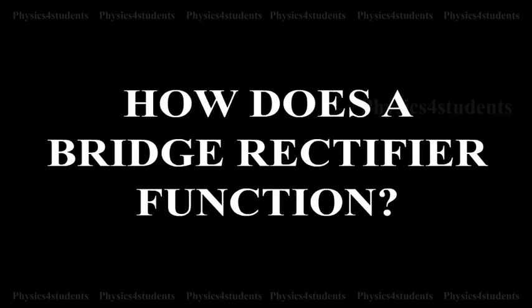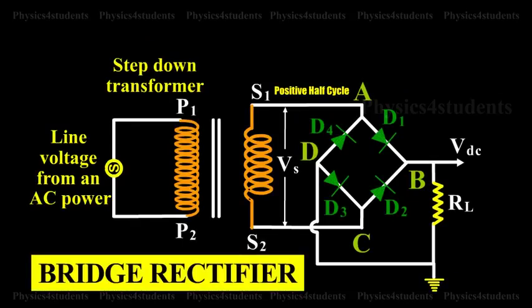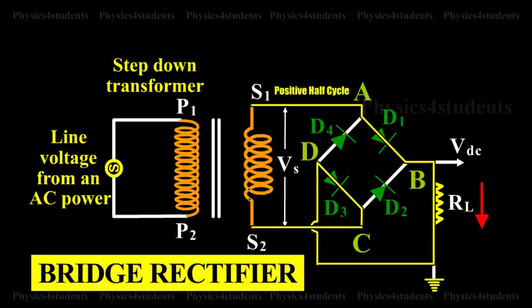How does a bridge rectifier function? During positive input half cycle of the AC voltage, the point A is positive with respect to C. The diodes D1 and D3 are forward biased and conduct, whereas the diodes D2 and D4 are reverse biased and do not conduct. Hence, current flows along S1, A, B, D, C, S2 through RL.